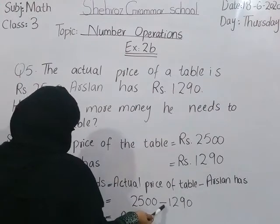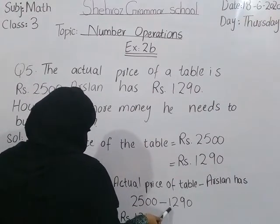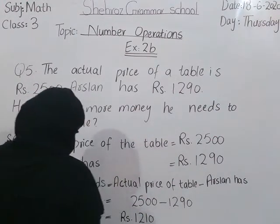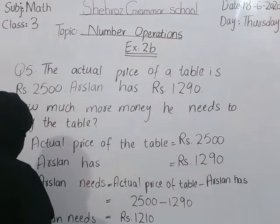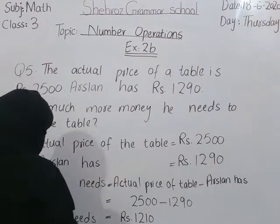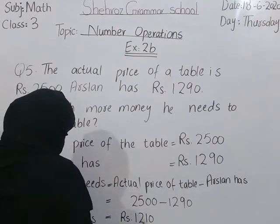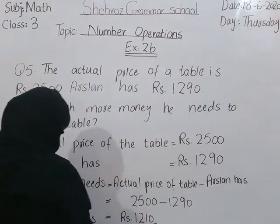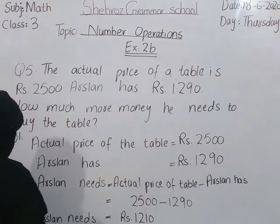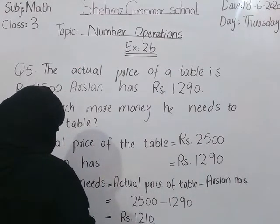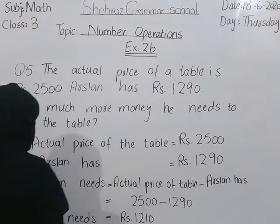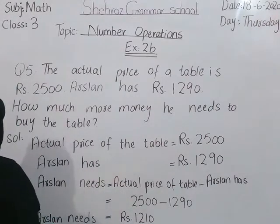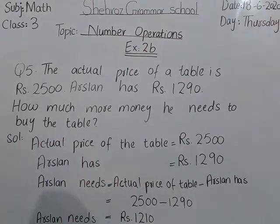2500 subtraction sign 1290. तो इन दोनों को बच्चों subtract करेंगे, हमारे पास रुपये आएंगे 1210. Arslan needs Rs. 1210. तो बच्चों इतने पैसे Arslan को और चाहिए, table खरीदने के लिए। ठीक है।